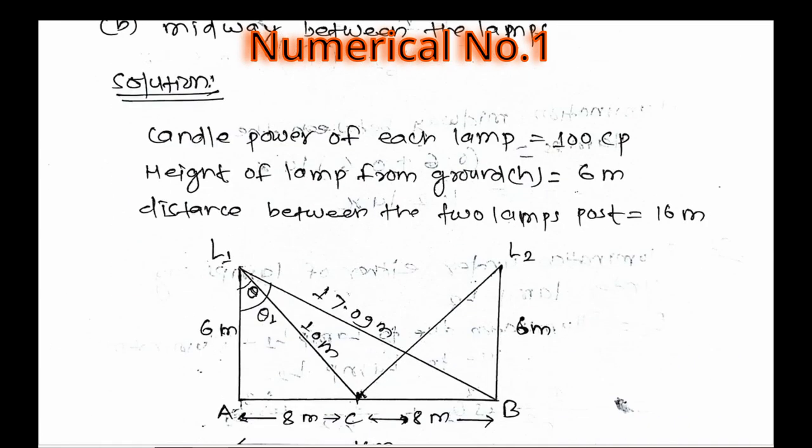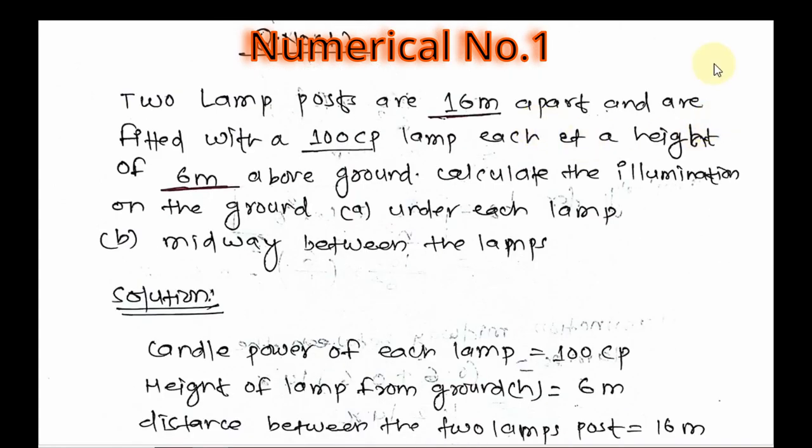Let's write all the given data. The candlepower of each lamp is 100 cp, which means I equals 100, and the height of each lamp is 6 meters.